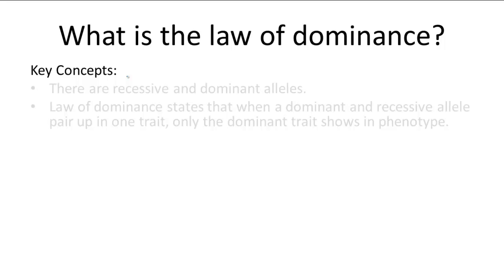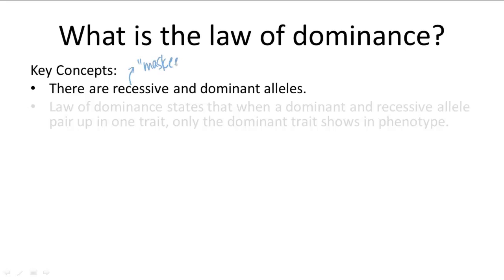Mendel could not pinpoint the mechanisms behind his laws, but today we know about genes and alleles and therefore have a much clearer picture about what's going on in the law of dominance. First thing to know: there are recessive and dominant alleles. Recessive alleles are those that are masked in the presence of other alleles, so they aren't expressed. Dominant alleles are the exact opposite — they're the ones doing the masking, so they are expressed in the presence of other alleles. This is exactly what the law of dominance states.